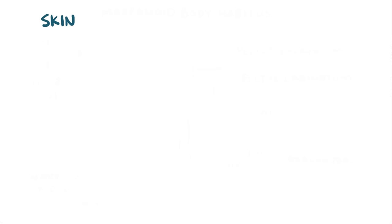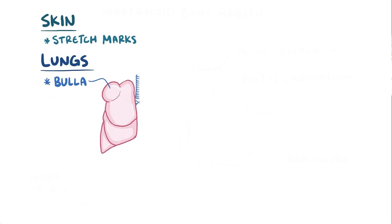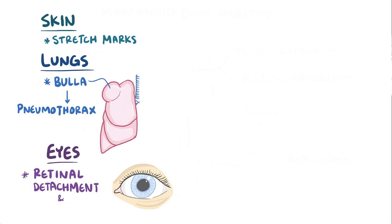In the skin, Marfan syndrome can cause stretch marks, and in the lungs it can cause bullae to form, which are large spaces that replace the normal architecture of the lungs and can cause a pneumothorax to form. In the eyes, Marfan syndrome is a risk factor for retinal detachment and a dislocation of the lens, which is usually in an upward direction.